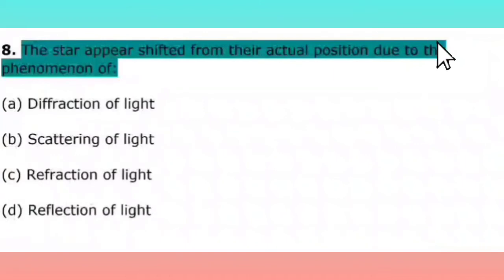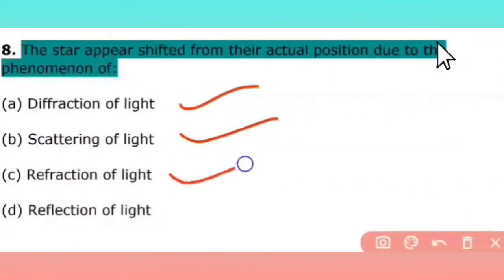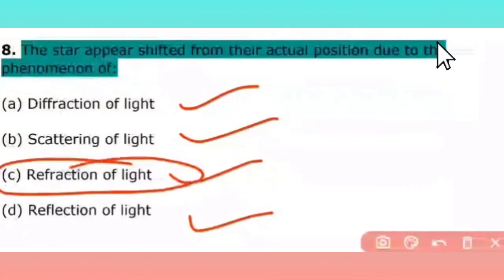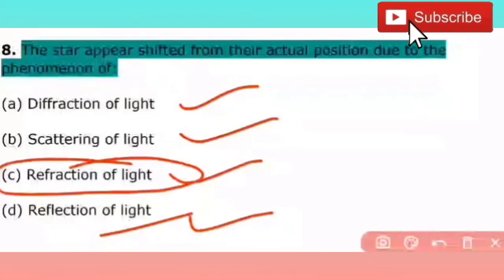The next question: stars appear shifted from their actual position due to the phenomenon of — diffraction of light, scattering of light, refraction of light, or reflection of light. The right answer is refraction of light. In refraction, the light coming from distant stars is bent, which is the main reason stars appear shifted from their actual position.